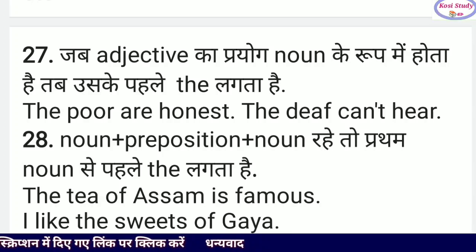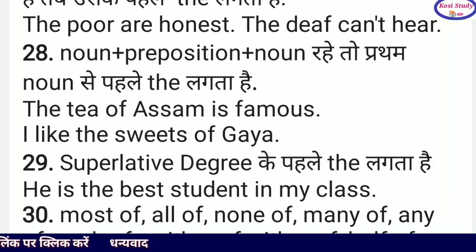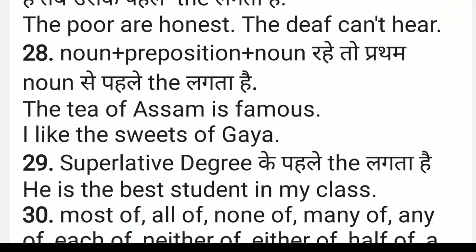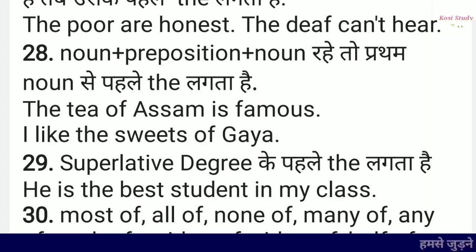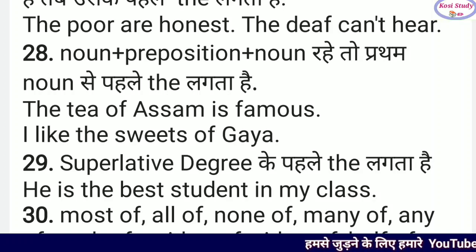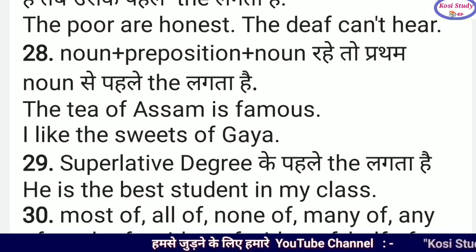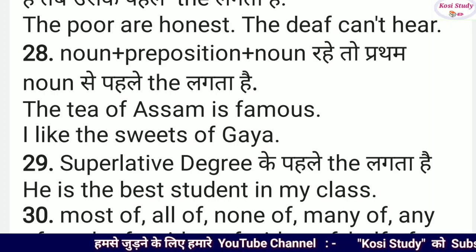Noun + preposition + noun रहे तो प्रथम noun के पहले 'the' का प्रयोग करते हैं — जैसे 'The tea of Assam is famous', 'I like the sweets of Gaya'। यानि Assam की चाय प्रसिद्ध है, मैं गया की मिठाइयाँ पसंद करता हूँ। यहाँ noun + preposition + noun है, तो पहले वाले noun से पहले 'the' का प्रयोग किया गया — यानि 'tea' से पहले और 'sweets' से पहले 'the' — चाहे वो singular हो या plural हो।